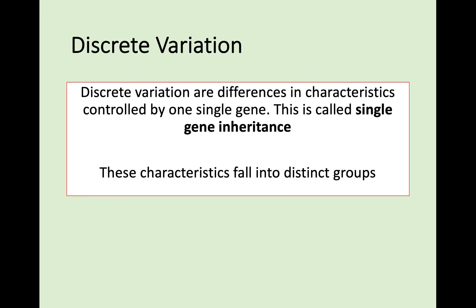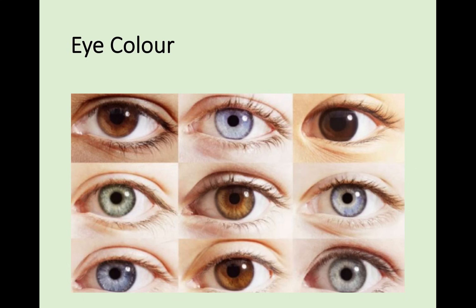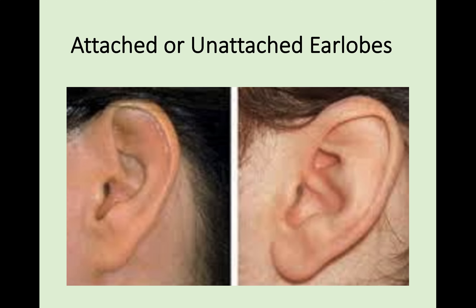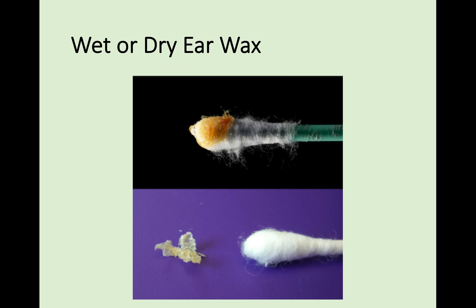You'd be able to divide up a room into distinct groups due to discrete variation. For example, eye colour — you'll have brown eyes, blue eyes, green eyes. It's not a range; you could divide people up into groups very easily. Another one is earlobes: you can have attached or unattached earlobes — if your earlobe goes directly into the side of your face it's attached, if not it's unattached. That's controlled by a single gene. Another interesting one is earwax: you either have wet earwax or dry earwax — distinct groups controlled by a single gene. These are all forms of discrete variation.